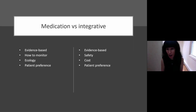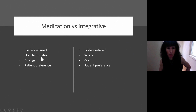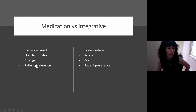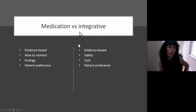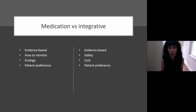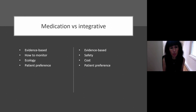Treatment: thinking about medication versus integrative options. We want to offer patients evidence-based treatment with medication. How to monitor is really important — you've got to get patients enlisted in keeping some kind of diary. The ecology of the patient matters; if someone has comorbid hypertension, that might influence you to pick one treatment over another. And patient preference — patients often Google things. I've incorporated that into how I practice and try to answer those questions and really address them head-on.